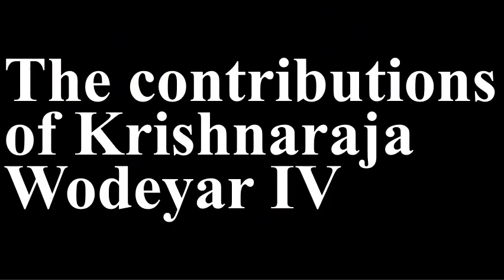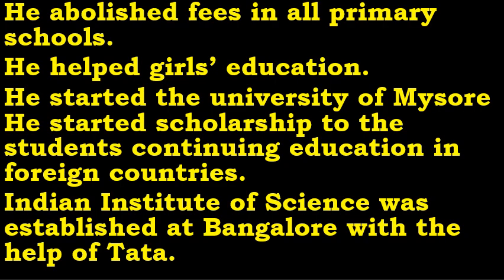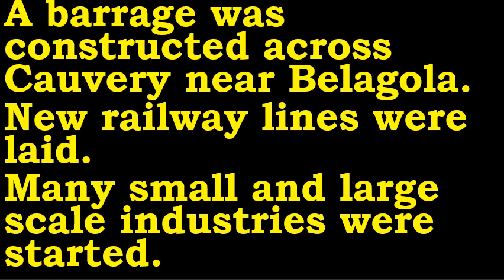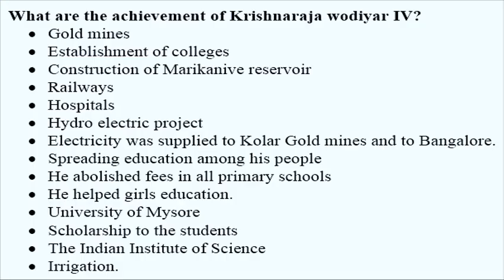The contributions of Krishnaraja Wadiyar IV are very important. He abolished fees in all primary schools, helped girls' education, started the University of Mysore, and gave scholarships to those who wanted to study abroad. The Indian Institute of Science was also started. A barrage was constructed across River Cauvery, railway lines were laid, and industries were encouraged.